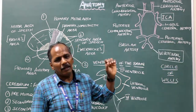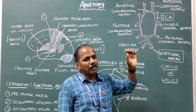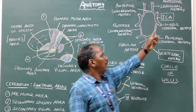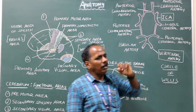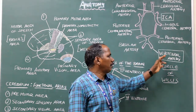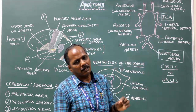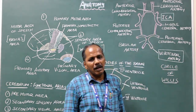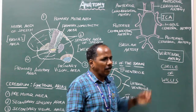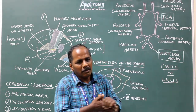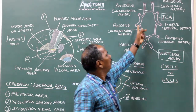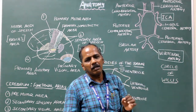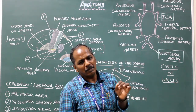Blood supply to the brain. The brain is supplied by two main arteries: number one, internal carotid artery; number two, vertebral artery. The branches from the internal carotid artery and the vertebral artery join to form a network known as the circle of Willis, or circulus arteriosus.